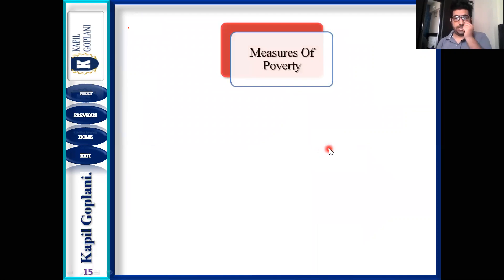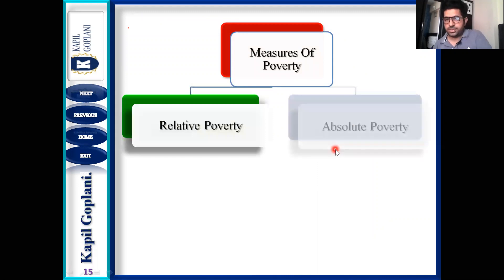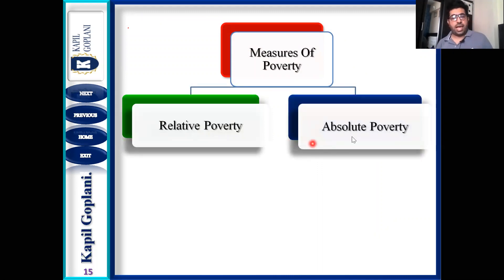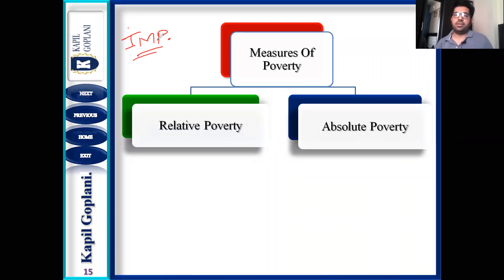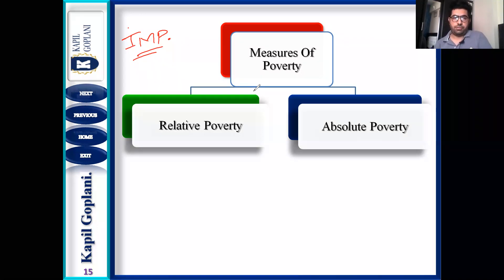Now let us see the measures of poverty. There are two measures: relative poverty and absolute poverty. This is one of the major and important questions from the CBSE point of view — it comes repeatedly in exams. In class 12 Indian economics, this is a very important topic from the examination point of view.